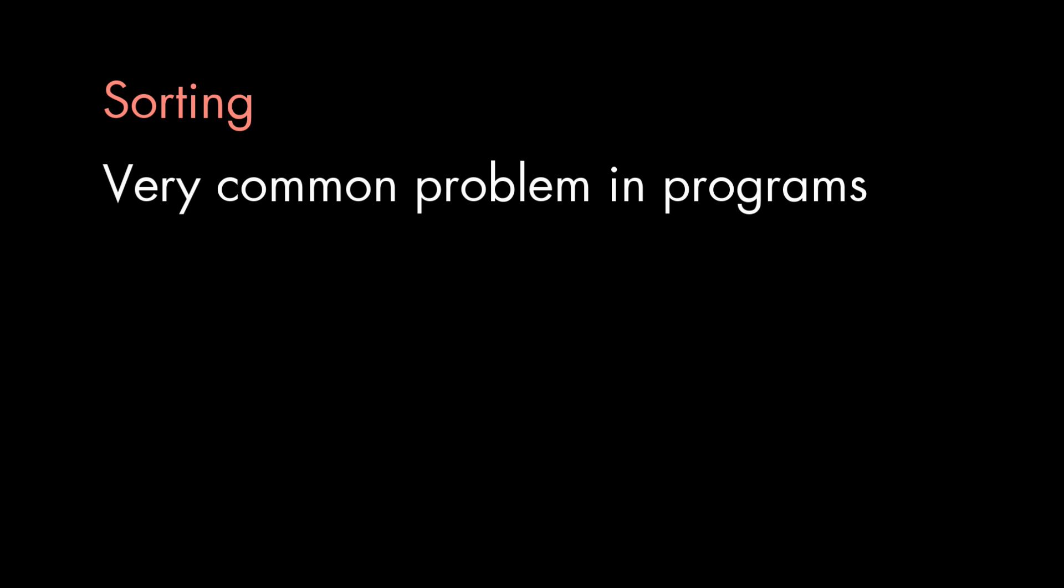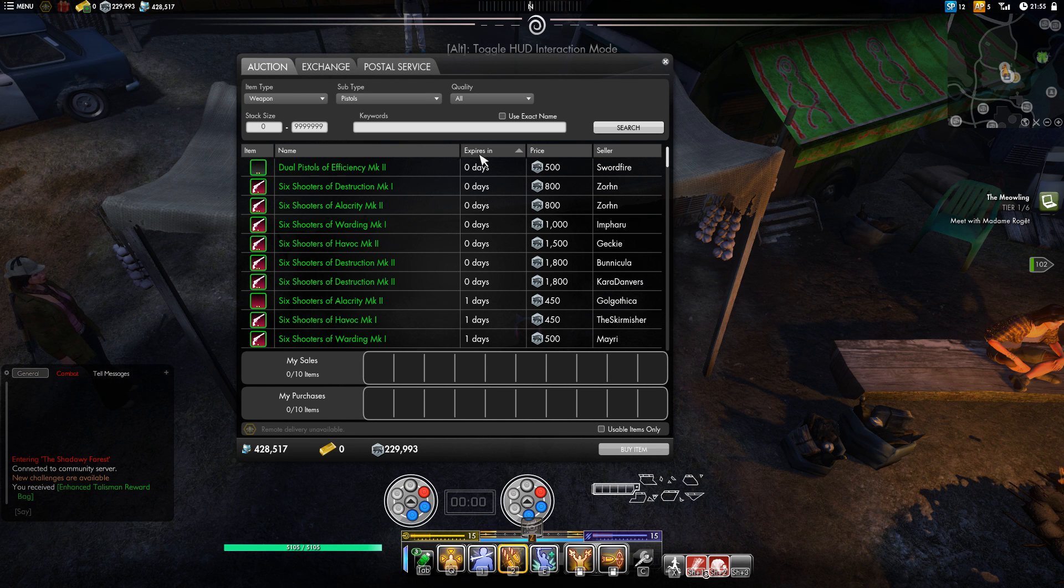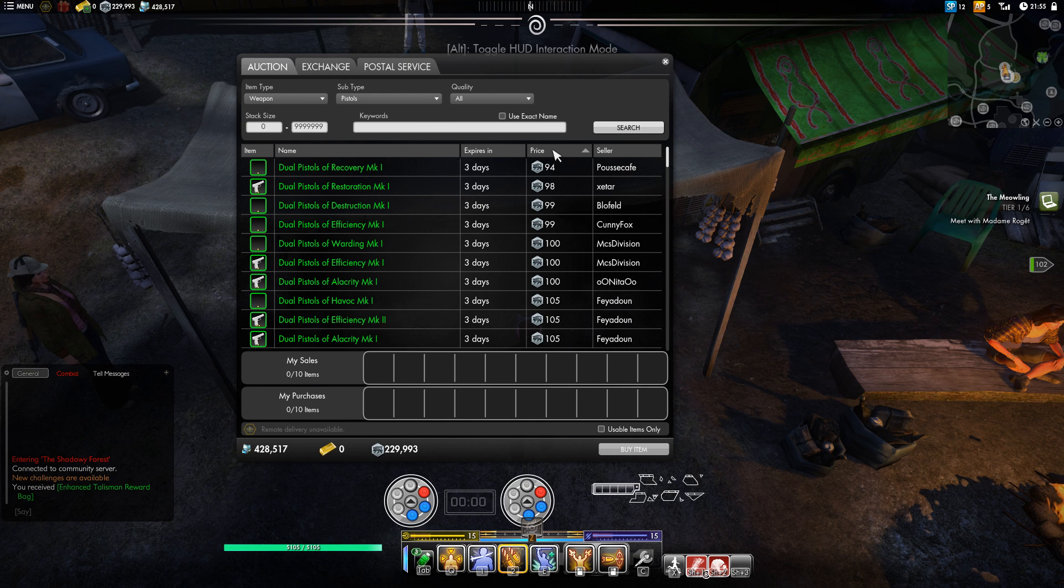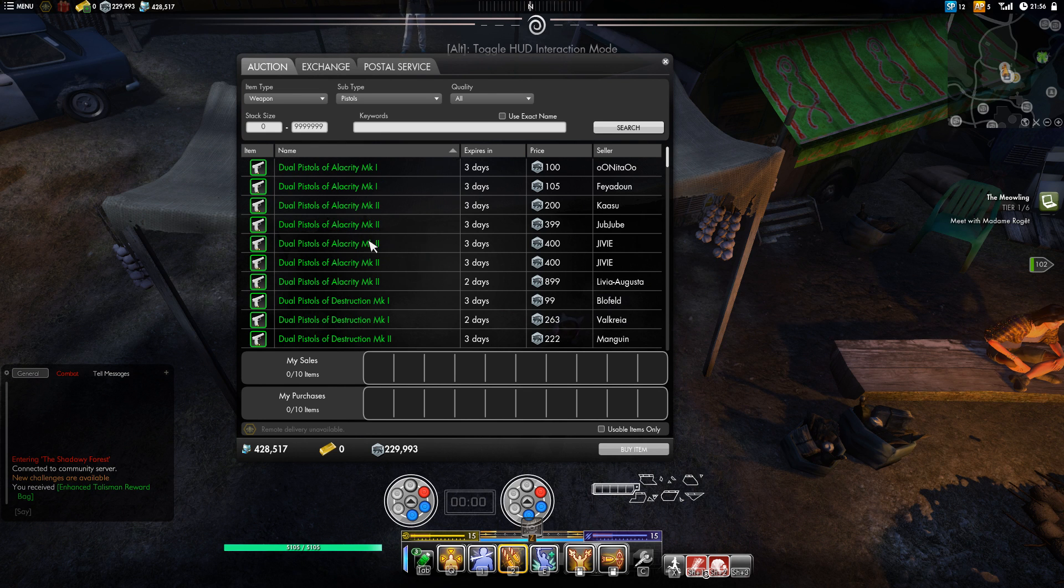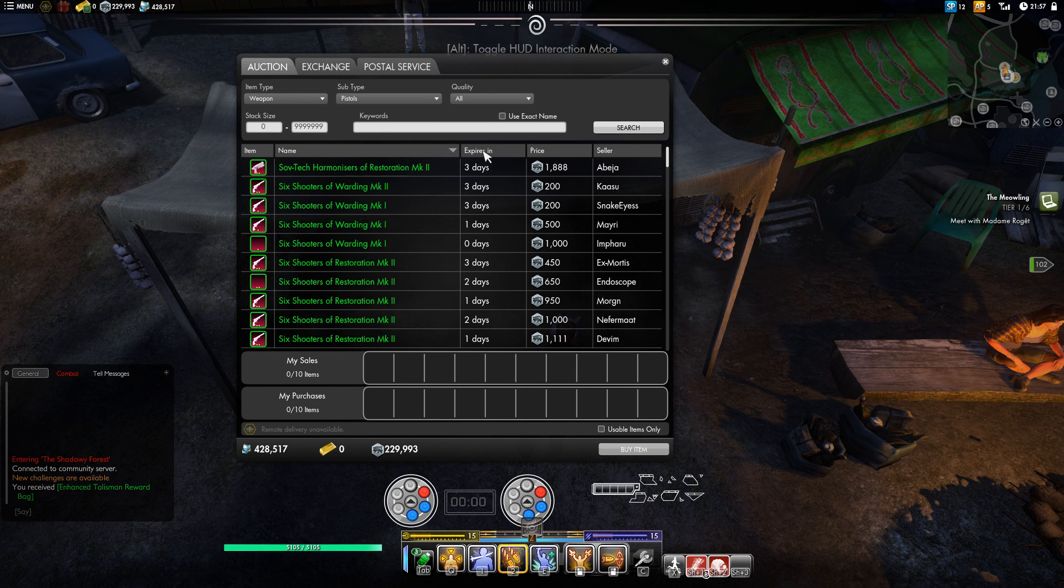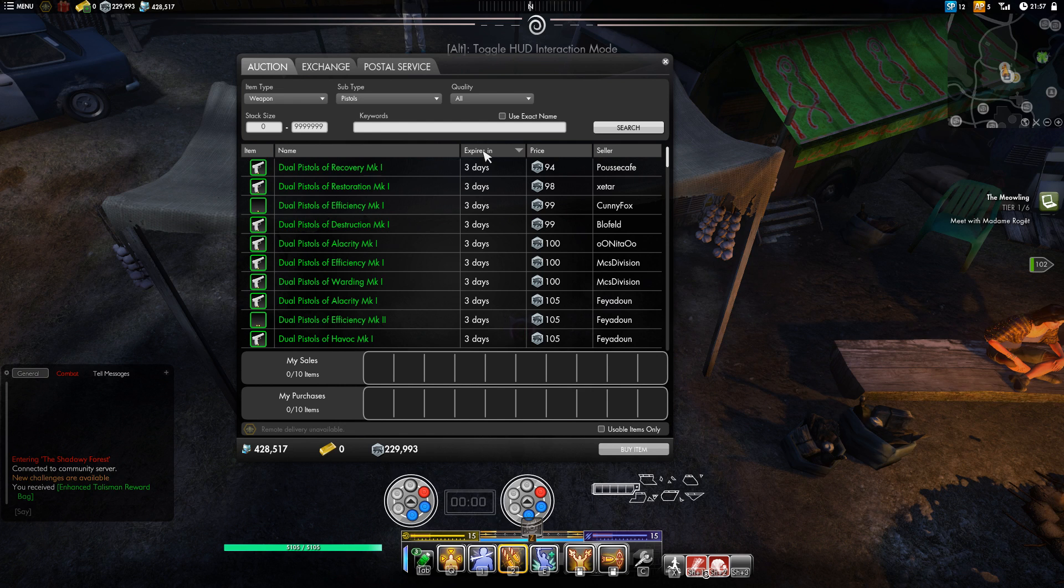And sorting is definitely a common problem. Sometimes you know when a program is sorting because that's what you're asking it to do. Like when you click on a column heading. But sorting happens behind the scenes all the time as well. It's much easier for a program to search through data that's been sorted, for example.